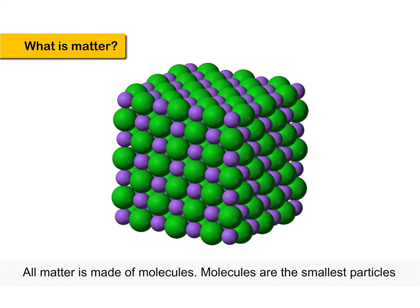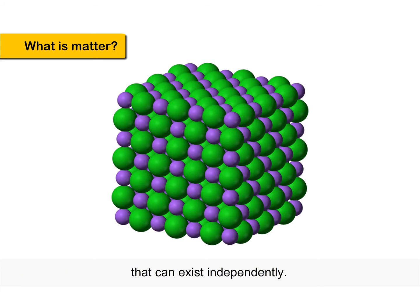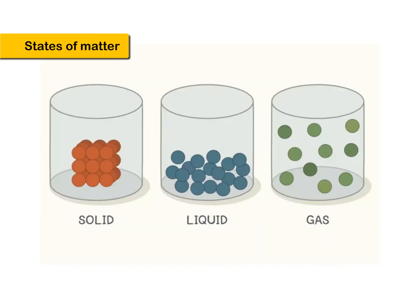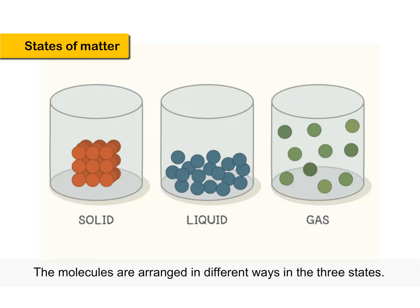All matter is made of molecules. Molecules are the smallest particles that can exist independently. Matter is found in three states: Solid, Liquid and Gas. The molecules are arranged in different ways in the three states.